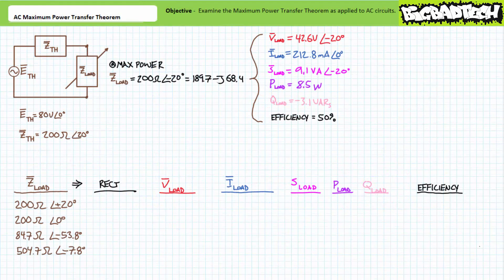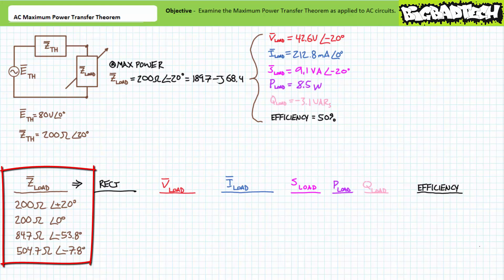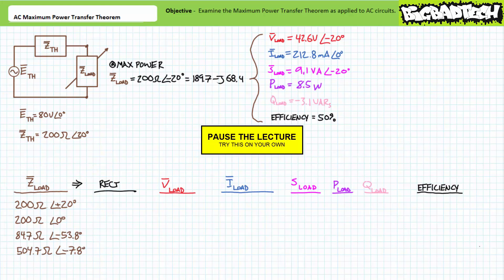Speaking of conditions at other than maximum power, consider the following scenarios. As an exercise to the viewer, I invite you to calculate the apparent, real, and reactive power delivered to the load, as well as the efficiency of real power delivery, for the following load conditions: 200 ohms at an angle of positive 20 degrees; 200 ohms at an angle of zero degrees; 84.7 ohms at an angle of negative 53.8 degrees; and 504.7 ohms at an angle of negative 7.8 degrees. By all means, pause the lecture and try this on your own. It may be helpful to resolve the impedance values into rectangular equivalents before resorting to extensive calculations.